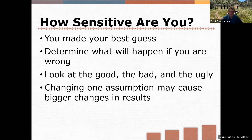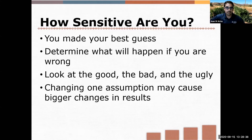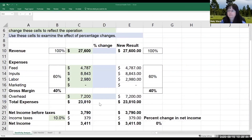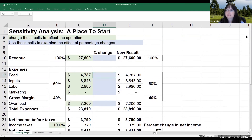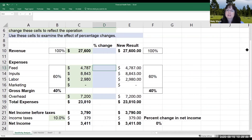A change in one assumption may cause bigger changes as a result — Ruby is going to bring up a tool and we'll run through some examples using the numbers from the budget to look at changes that can occur over time. As soon as Ruby gets the spreadsheet up, we'll run through those examples. The spreadsheet will be available for you to download, along with all the other budget tools.